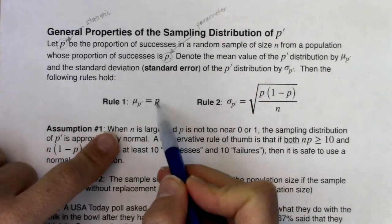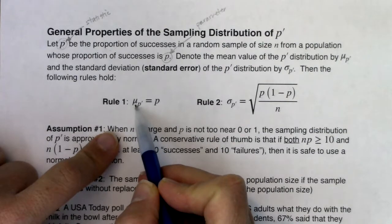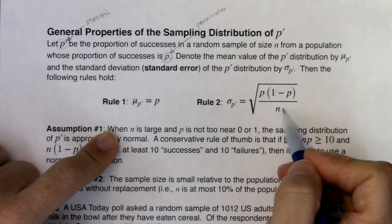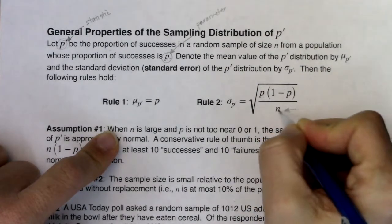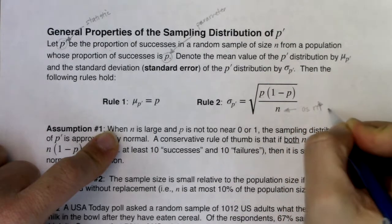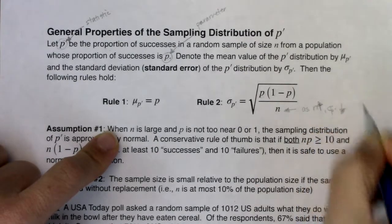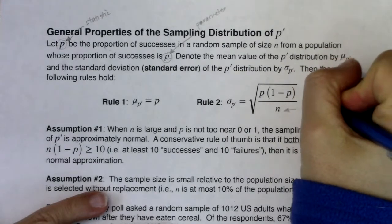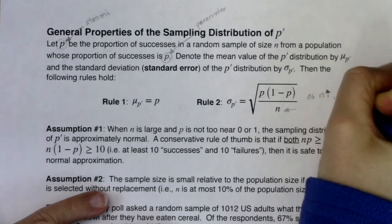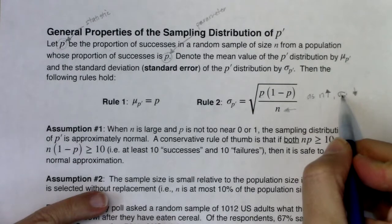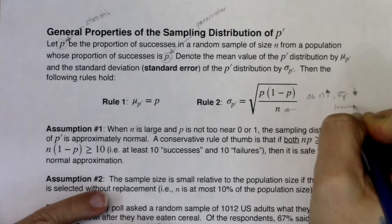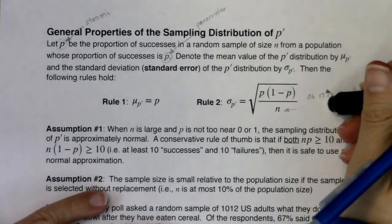In terms of the sampling distribution, whatever your population proportion is, that's where we think the center of the sampling distribution will be. We use this formula to calculate the standard error. Similar to what we saw in mean land, you can see there's an n in the denominator, so as sample size increases, this standard error will decrease. In other words, the standard deviation of your sampling distribution gets smaller — variability decreases — just as we saw in mean land.